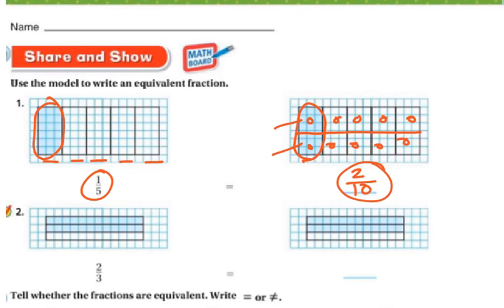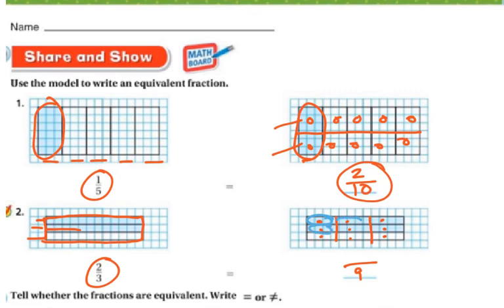In this next one, they have it broken into thirds — one, two, three. These are thirds, and two of them are shaded. So now I'm going to break this other one apart differently. I cut the thirds into thirds, so now I have nine parts total. Of the nine parts, how many are shaded? The blue is shaded — one, two, three, four, five, six. So six-ninths is equivalent to two-thirds.